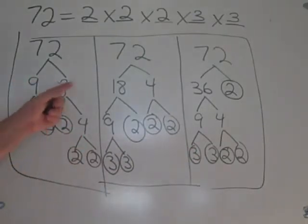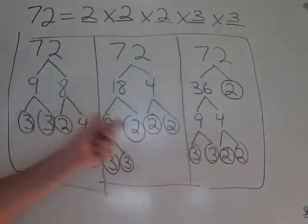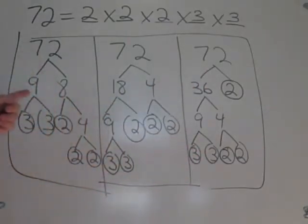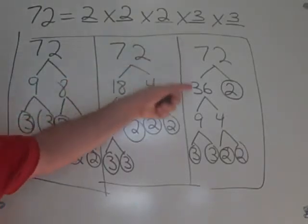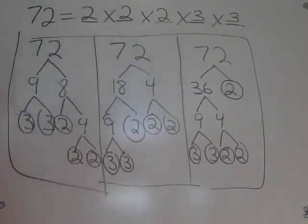Likewise with this. This has 8. None of the others have 8. It has 9 at the second level. The other ones have 9 at level 3. 1, 2, 3.